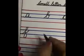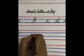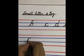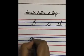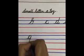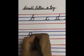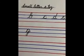Now G — it is simple like C, you will make it. Again you will join it, touch the fourth line and turn it over. This is small letter G.